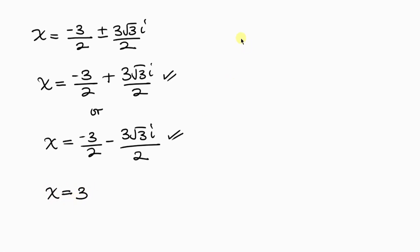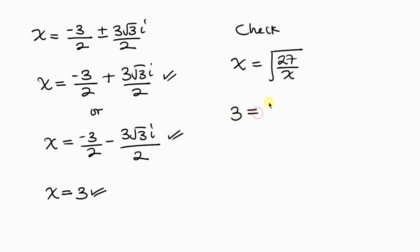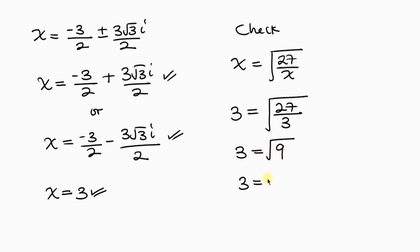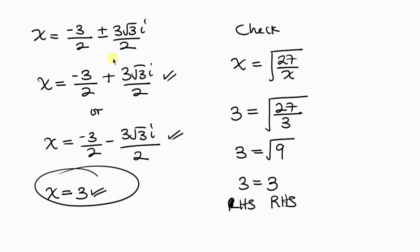Now let's check our real solution. The given equation is x equals the square root of 27 over x. Substituting x equals 3: the left hand side is 3, and the right hand side is the square root of 27 divided by 3, which is the square root of 9, which is 3. The left hand side equals the right hand side, so x equals 3 is a correct solution. You can go ahead and check the two complex solutions as well.